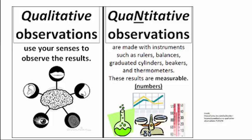Qualitative observations use describing words for what we see, hear, or smell. Quantitative observations, on the other hand, use numbers — these are results that are measurable. Whenever you record a measurement, that's a quantitative observation. They're made with instruments such as rulers, balances, graduated cylinders, beakers, and thermometers, to name a few. The difference between qualitative and quantitative observations is important.